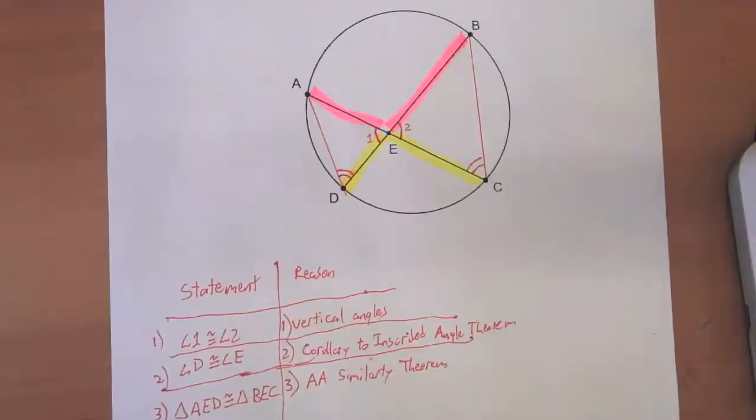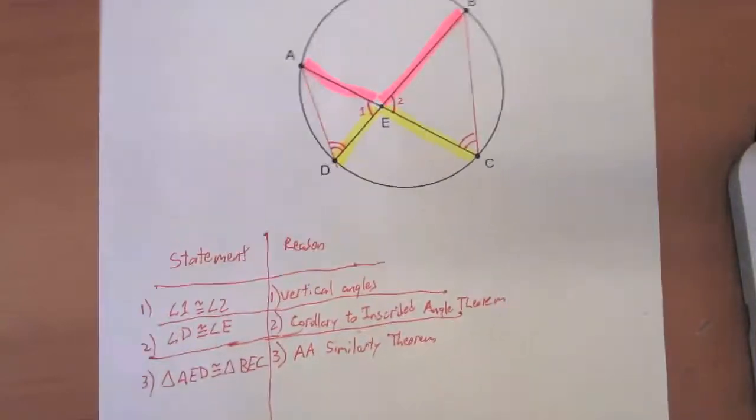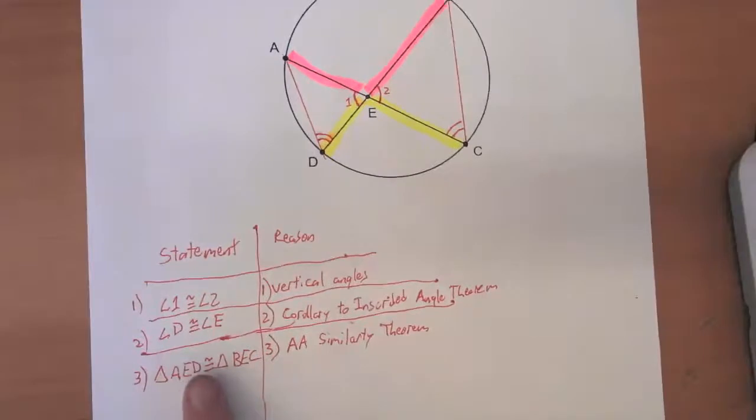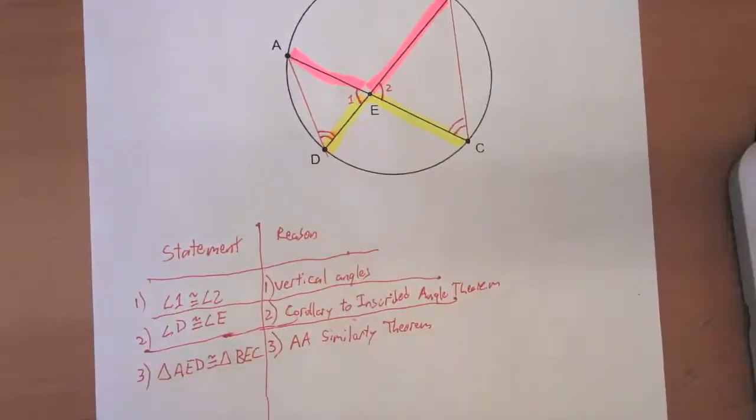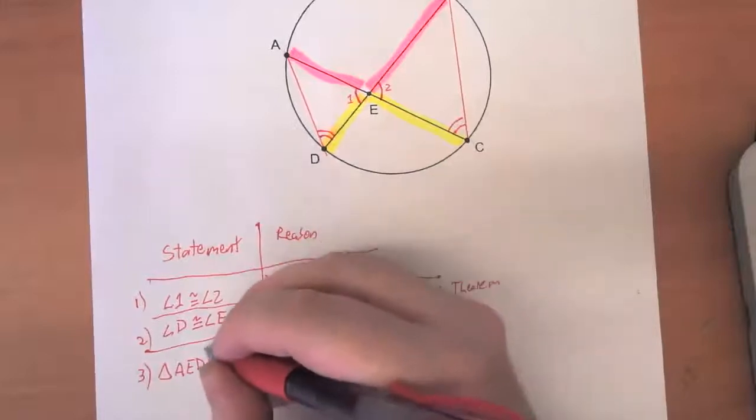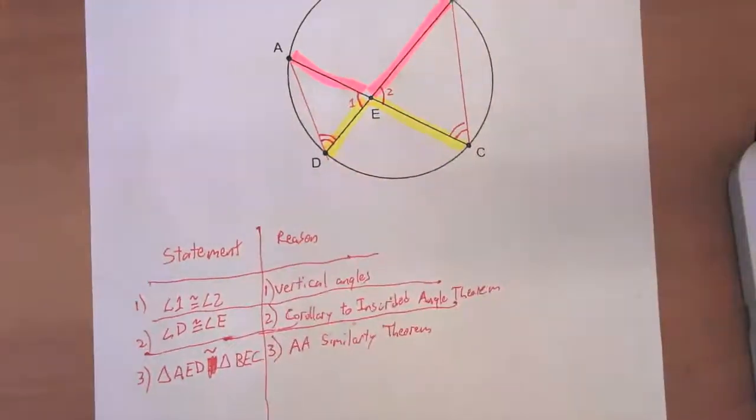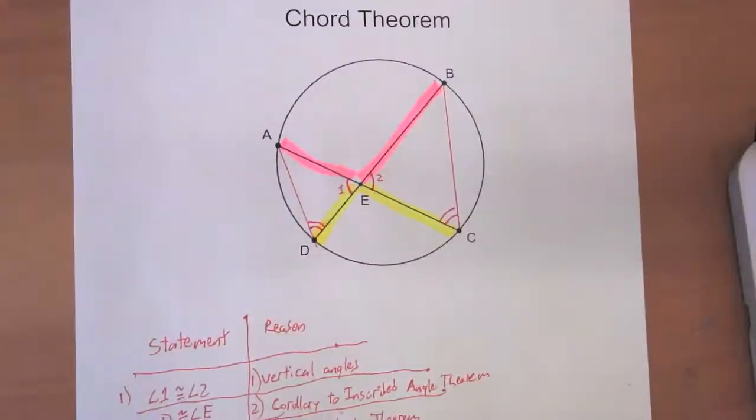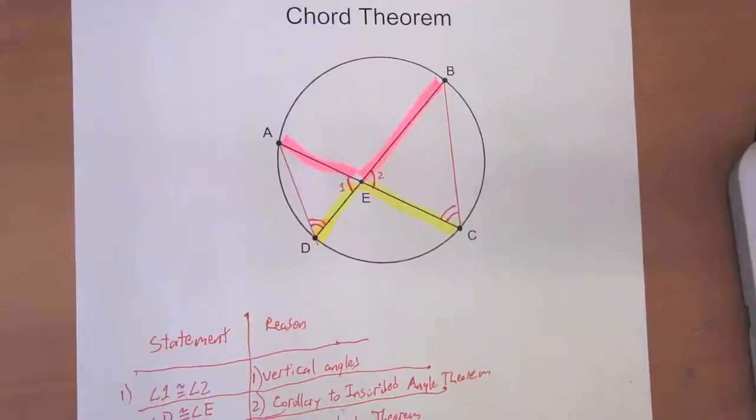Now that we've got those sides highlighted like that, let's write a proportional statement that we can use to follow up with our statement that those two triangles are similar. So what is the proportion we can set up between these two triangles?